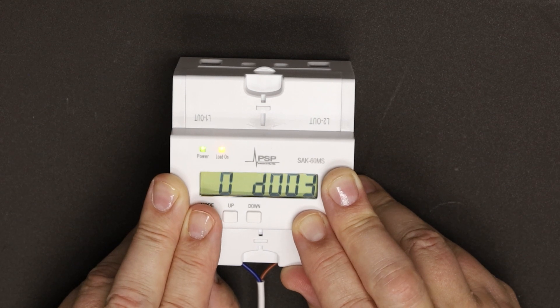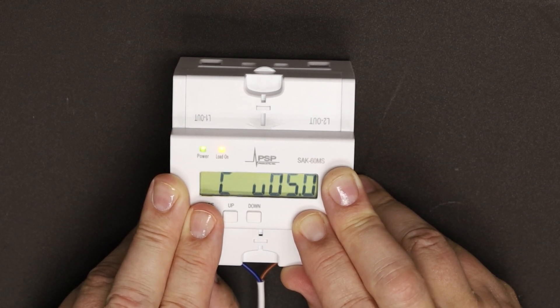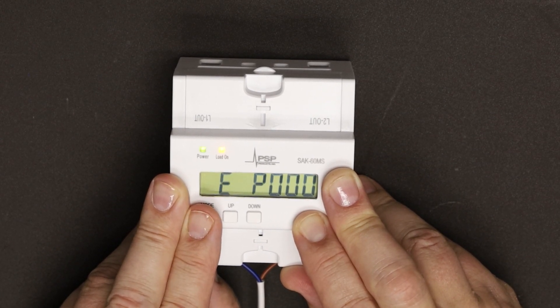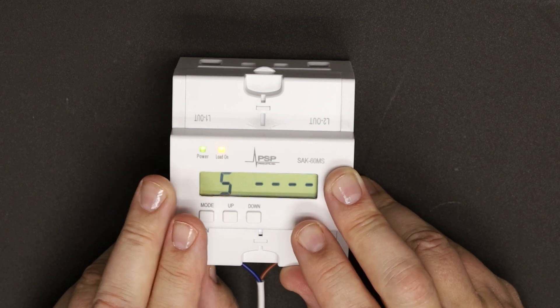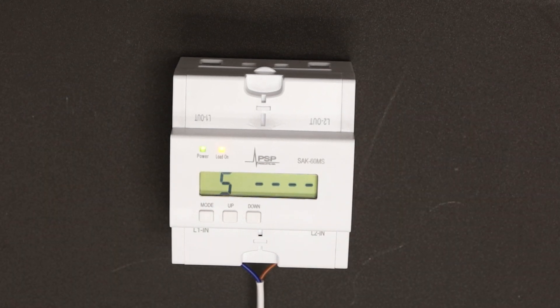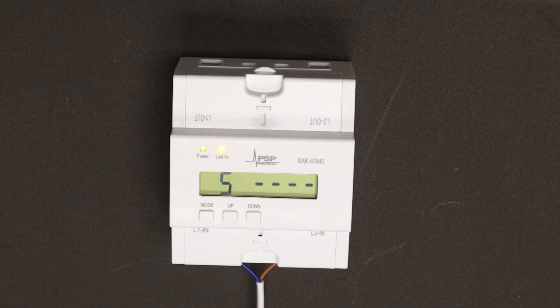That's it. Those are all the settings that need adjustment. The other three settings you don't adjust. Just leave the SAK60 alone for seven seconds. It will save those changes and reload with the new values.